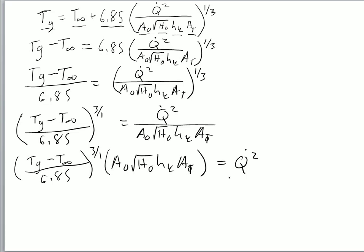And then we will, technically the square root is 2 over 1. So some people will just say take the square root here, but this one is the 2 over 1 that we're using. So we're going to raise this whole side to the 1 half power. So we'll have T_g minus T infinity over 6.85 to the 3 over 1 power multiplied by A naught square root H naught h sub K area total, all raised to the 1 half power and that is equal to our heat release rate.